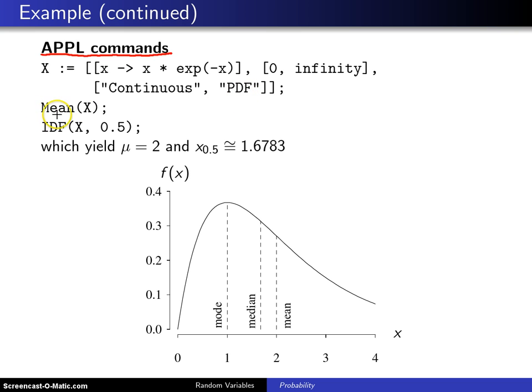When you call the mean function, it returns the mean of the distribution, which is 2. When you call IDF with an argument of X, which defines the distribution, and a second argument of 0.5, it returns the population median, which is 1.6783.